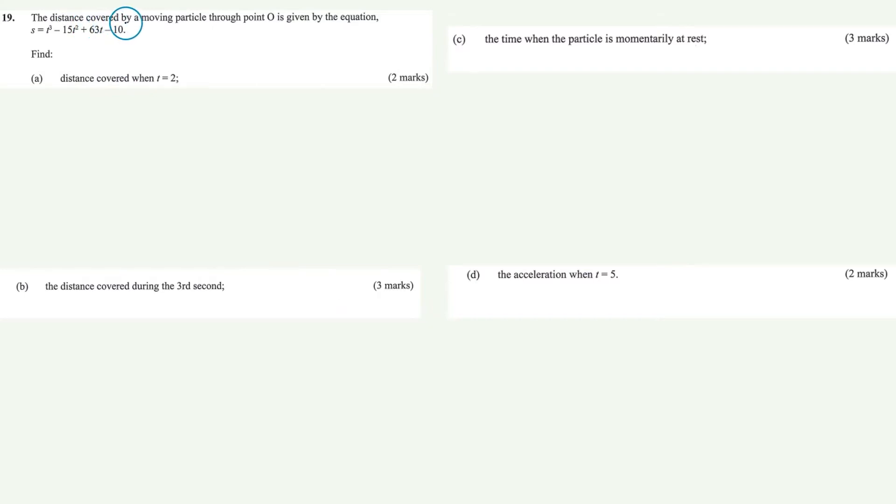The distance covered by a moving particle through point O is given by the equation s equals t cube minus 15t squared plus 63t minus 10. We are asked to find the distance covered when t is equal to 2.